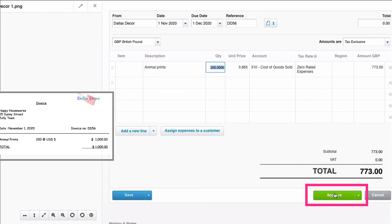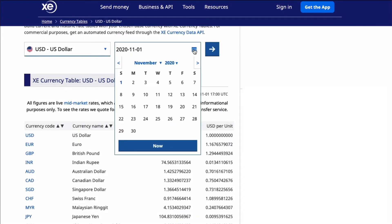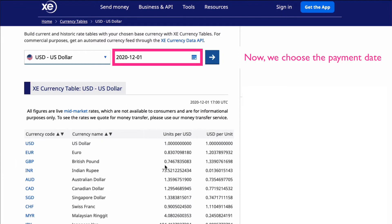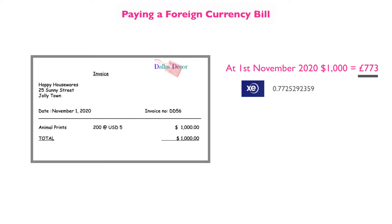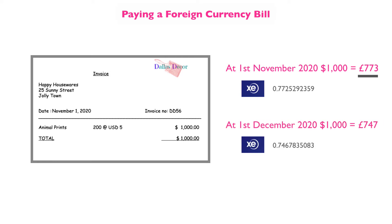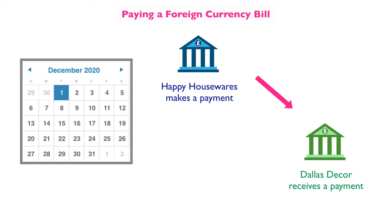We're going to approve and that invoice is in our system. Now, a month down the line, if we go back to xe.com and choose a month later, we can see that the GBP figure this time will be £747. So let's go to our bill — it was £773. When we pay that bill, because the dollar has dropped in value, we would expect it to only cost us £747. On the 1st of December, you make a payment to Dallas Decor based on the exchange rate at that time, costing you £747.